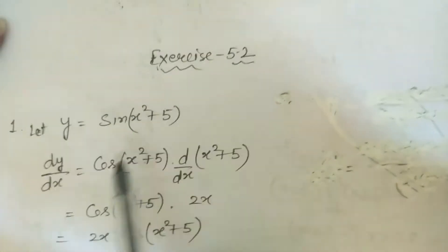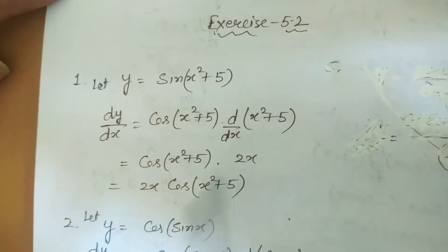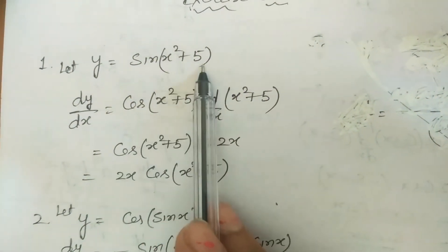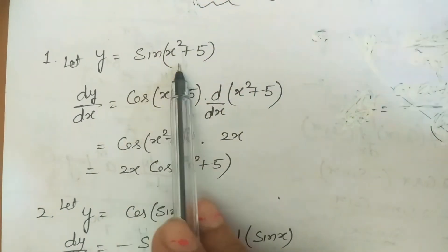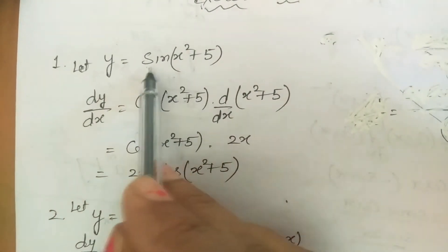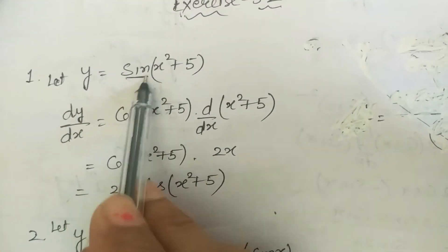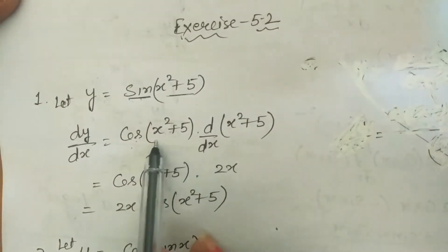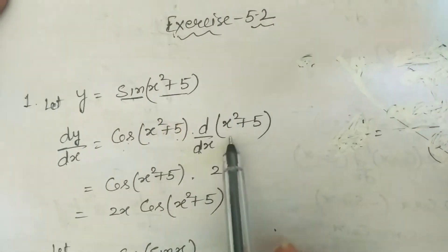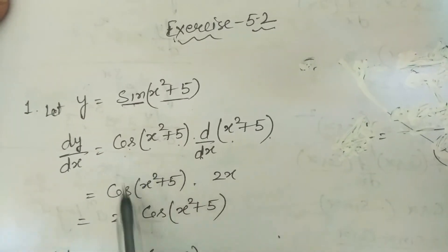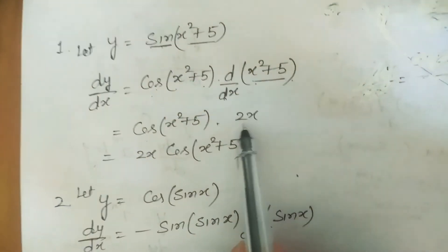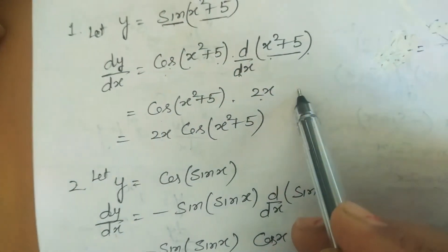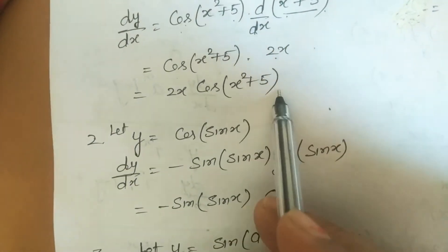Now exercise 5.2, question 1: y = sin(x²+5). Applying chain rule — derivative of sin is cos, so: cos(x²+5) · d/dx(x²+5). Derivative of x² is 2x and of 5 is 0. Answer: 2x·cos(x²+5).